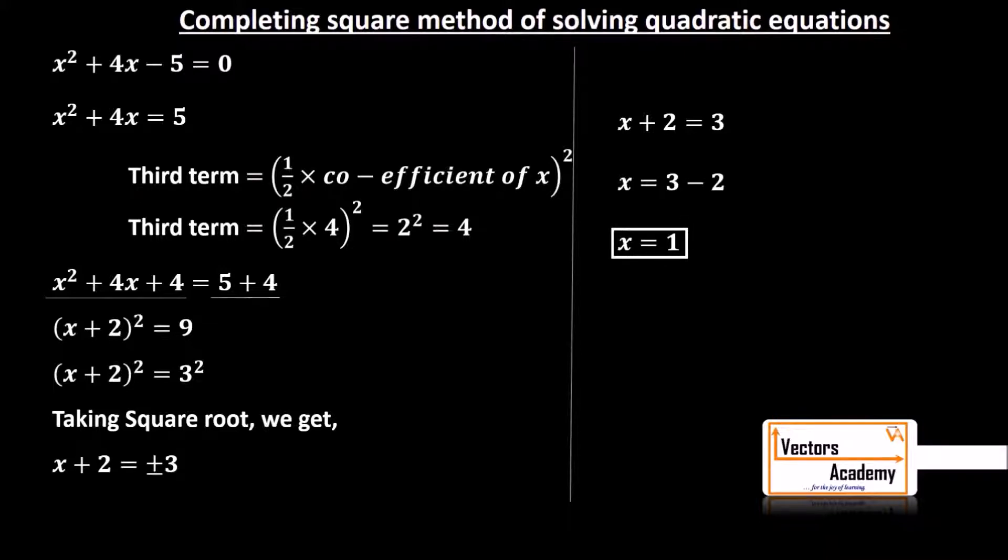For the second solution, I have to take the second sign of the right hand side, that is -3. So x + 2 = -3. Taking 2 on the right hand side, I will get x = -3 - 2 which is -5.